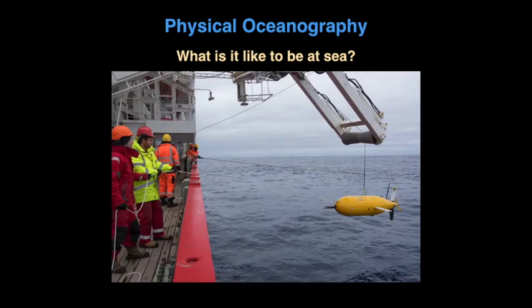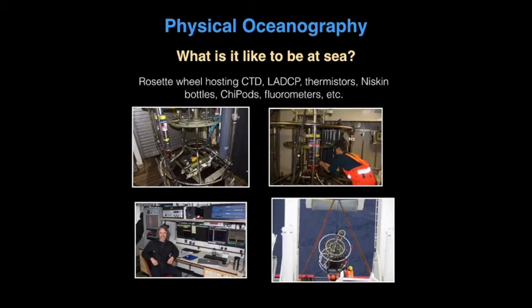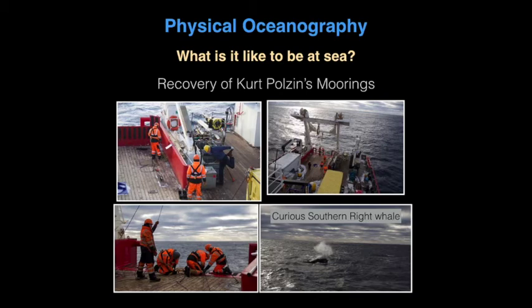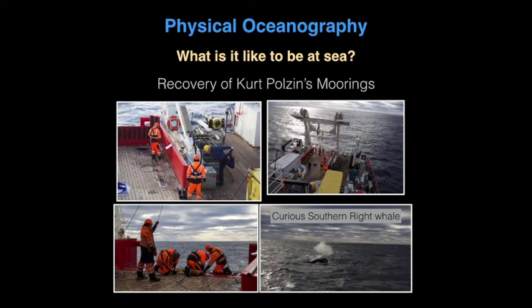I thought it might be fun to show you some pictures of what it's like to be at sea. These are some observations of sensors and people using the sensors on ships down near Antarctica. This, for example, is a mooring deployment. In the bottom right-hand corner, you can see a southern right whale that appeared — and then more closely here. They're pretty curious creatures, and they're not harmful at all, but they're interested in what we're doing with the moorings.